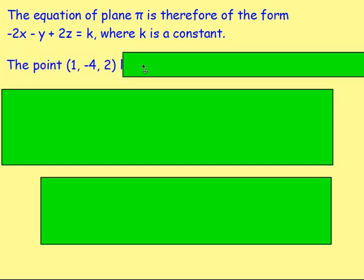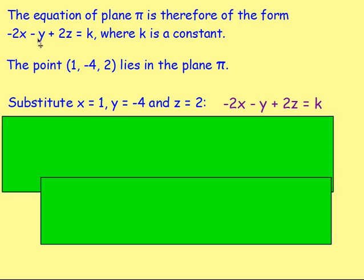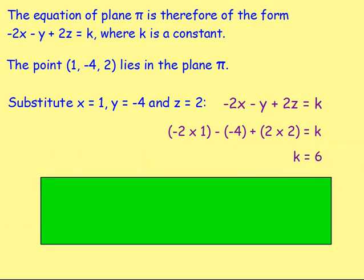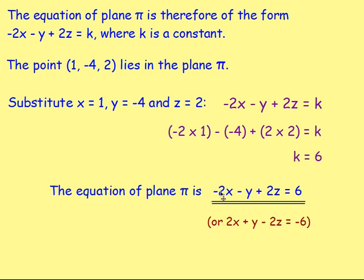We know the point (1, negative 4, 2) lies on the plane. To find k, we substitute x equals 1, y equals negative 4, and z equals 2 into negative 2x minus y plus 2z equals k. That gives negative 2 times 1, minus negative 4, plus 2 times 2, which equals 6. So the equation of plane pi is negative 2x minus y plus 2z equals 6. You could also multiply through by negative 1 to get 2x plus y minus 2z equals negative 6, which is also accepted.